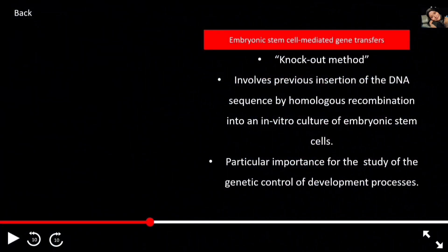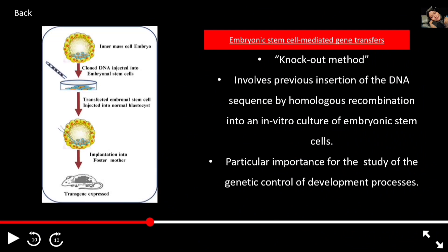The second method is embryonic stem cell mediated gene transfer, also called the knockout method. It involves insertion of the DNA sequence by homologous recombination into an in vitro culture of embryonic stem cells. Stem cells are undifferentiated cells that have the potential to differentiate into any cell type. This method is of particular importance for the study of the genetic control of developmental processes.